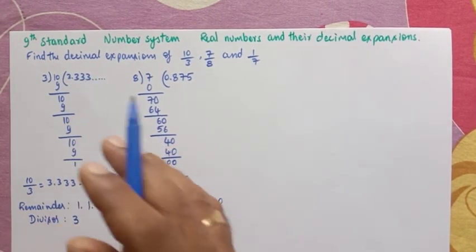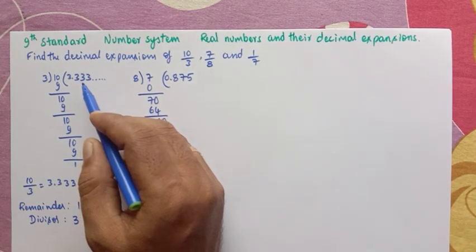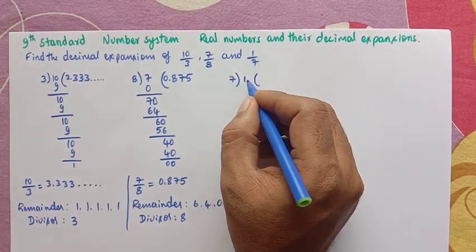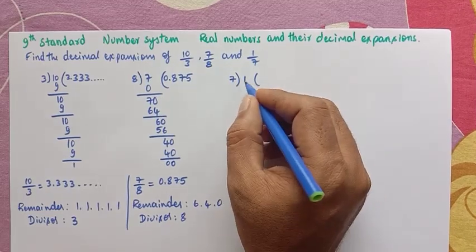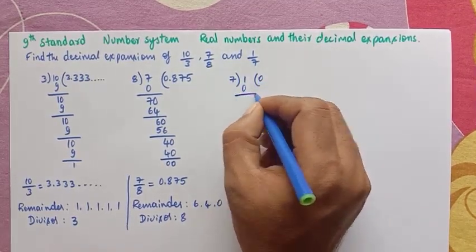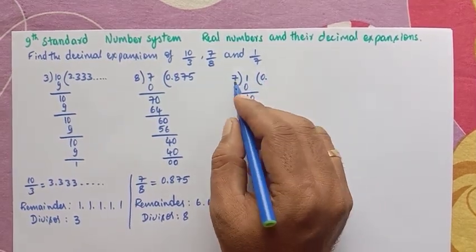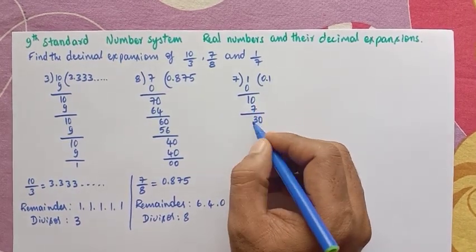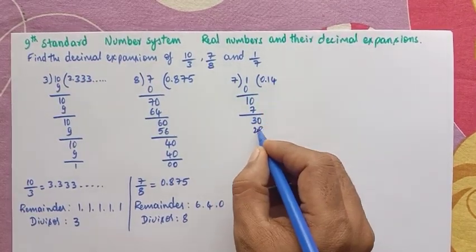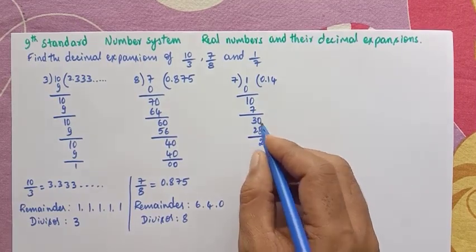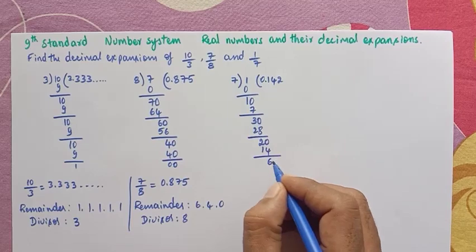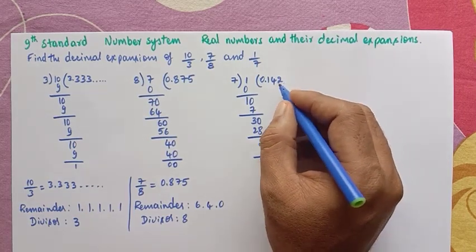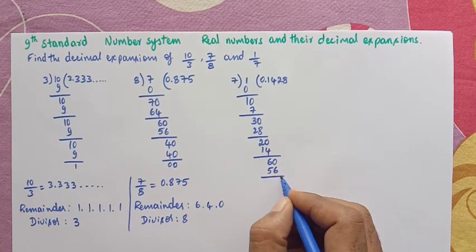What is recurring? 3 is repeating in every step. Now, moving on to 1 divided by 7. 7 zeros are 0, so 1 is the remainder. Put a point here, we get 10. 7 ones are 7, remainder is 3. Then 7 fours are 28, remainder is 2. Then 7 twos are 14, remainder is 6.